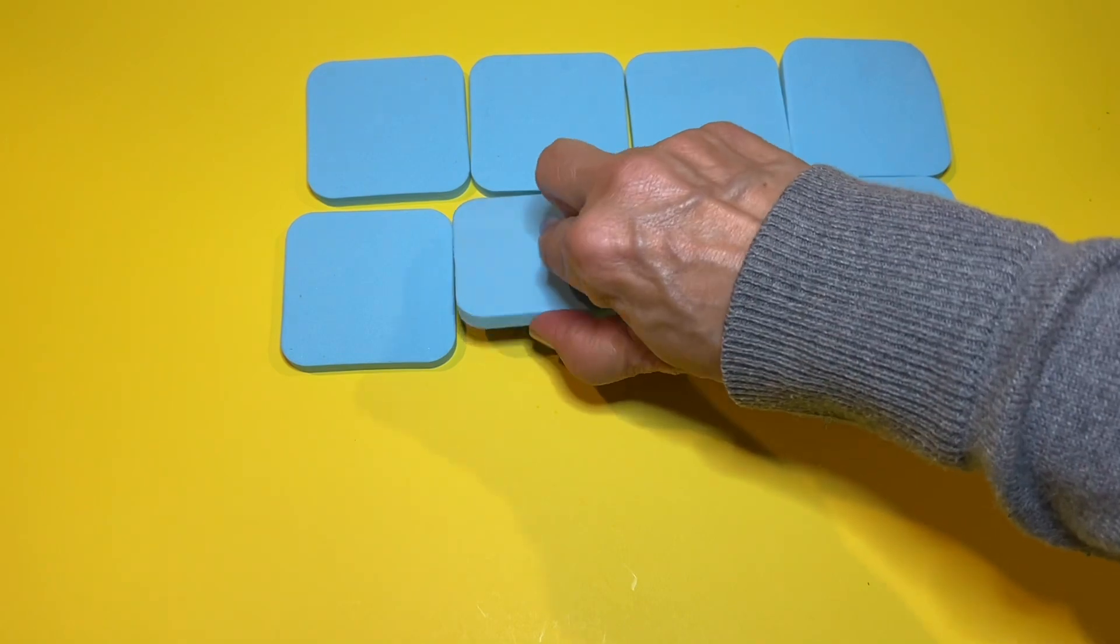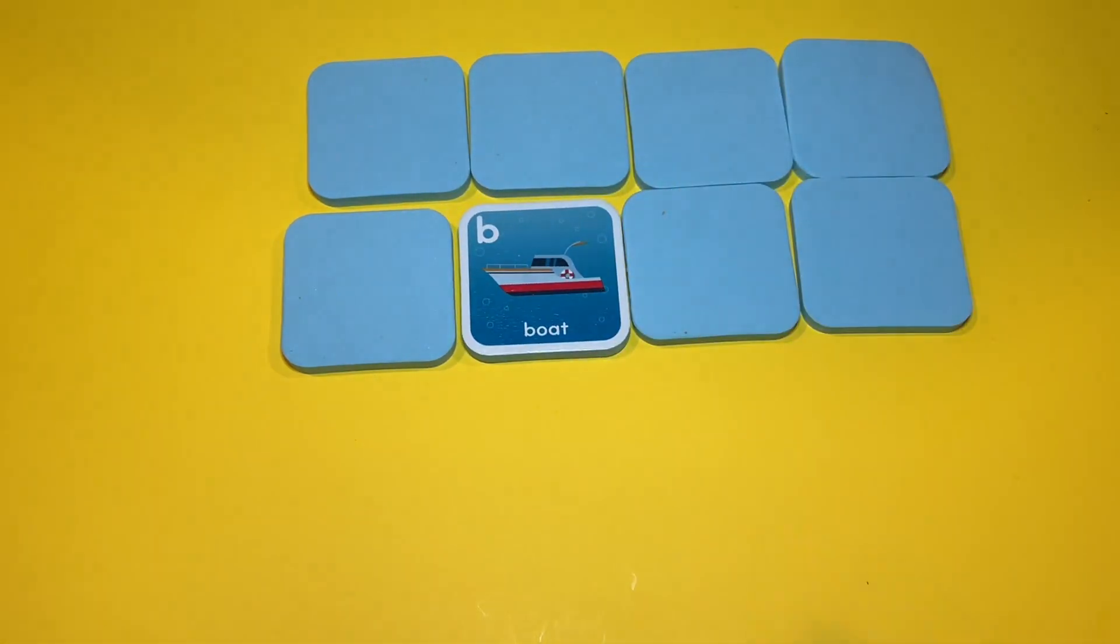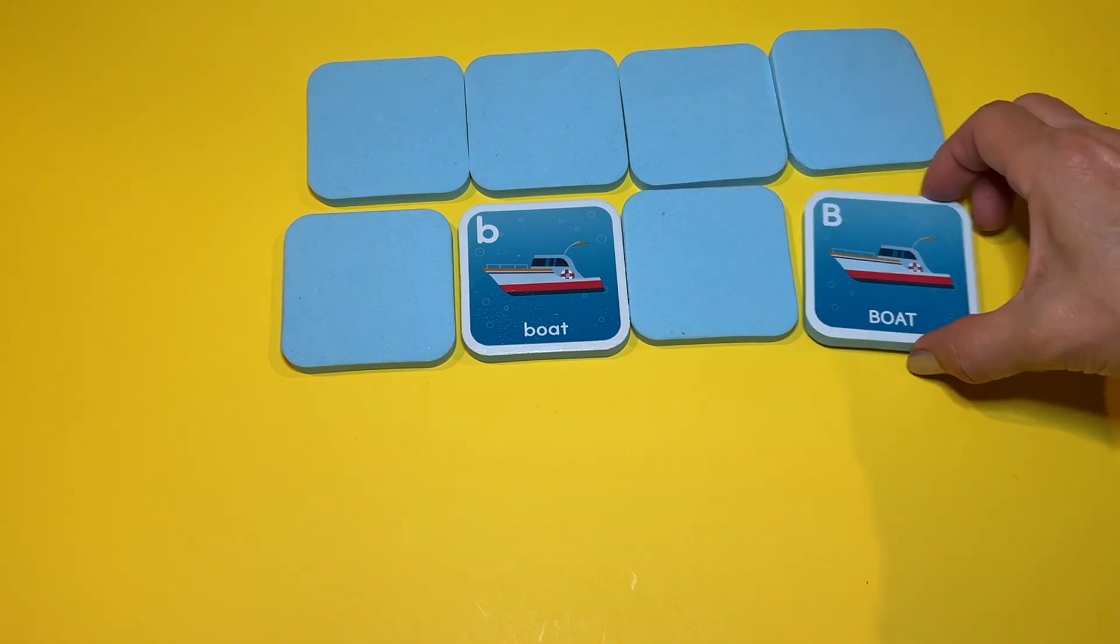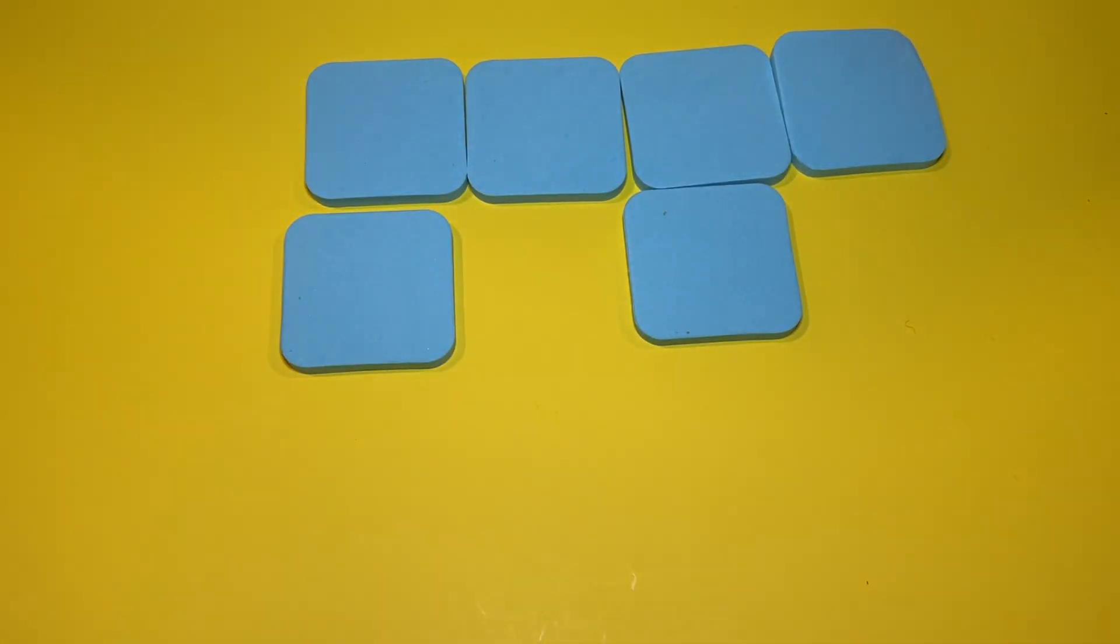How about this one? A boat. Where's our boat? This is a small B. Where's our big B boat? It's right over here. Yay. You guys are so smart.